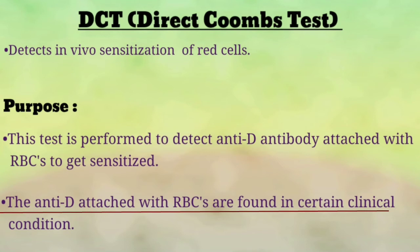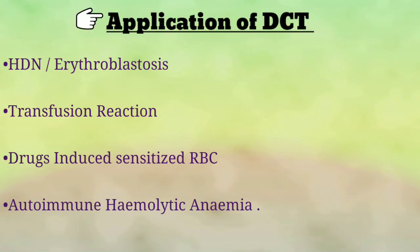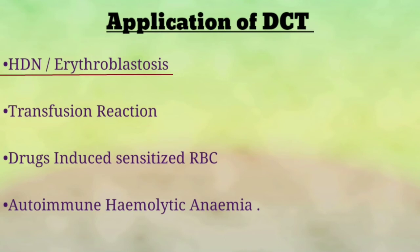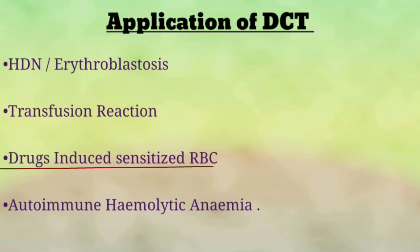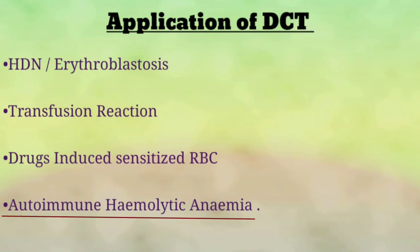The anti-D antibody attached with RBCs is found in certain clinical conditions. Applications of the direct Coombs test: the following conditions are — HDN (hemolytic disease of the newborn, also called erythroblastosis), transfusion reaction, drug-induced sensitized RBCs, and autoimmune hemolytic anemia. These are the conditions where we apply the direct Coombs test.